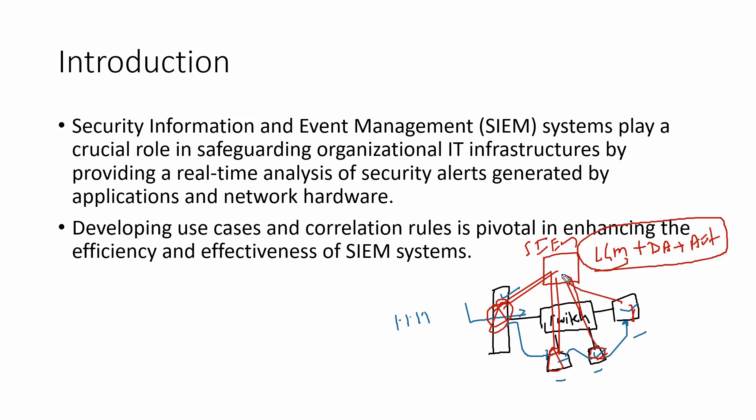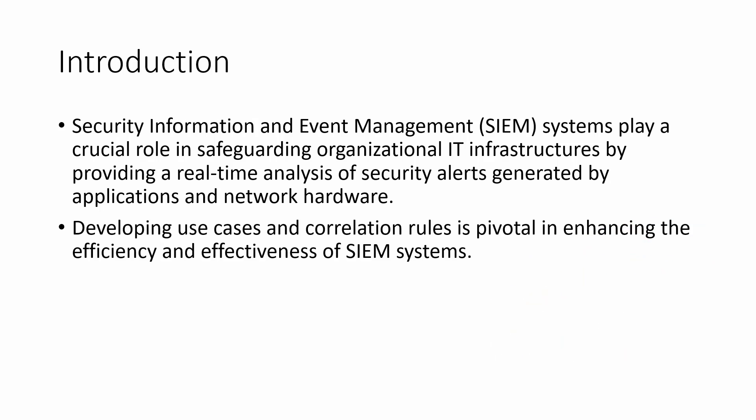With a SIEM in place, any activity on the firewall or on systems B, C, D — all information goes to the SIEM. The SIEM collects the logs, correlates the logs, generates the event, and that event is notified to the administrator, who then confirms whether it is an incident or not. So an event is always generated by the tool; an incident is discovered by the human.